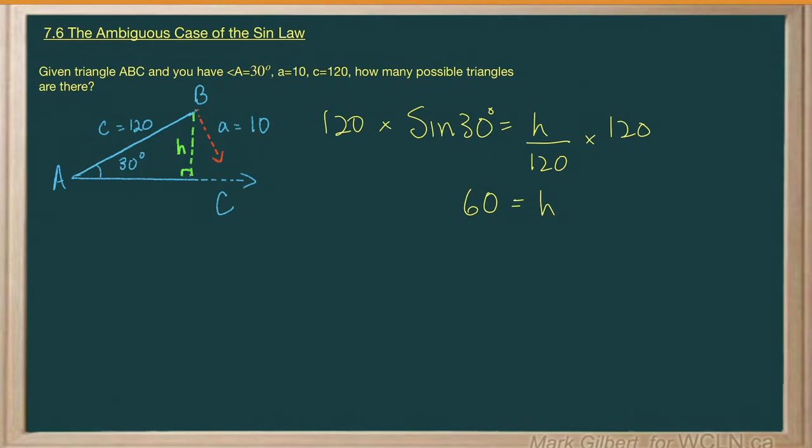Now in this case, you can see that we had A equal to 10. So side A is less than the height.